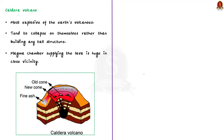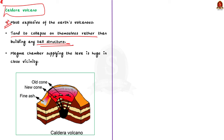The third type of volcano is called a caldera. These are the most explosive of earth's volcanoes. They are usually so explosive that when they erupt, they tend to collapse onto themselves rather than building a tall structure. These collapsed depressions are called calderas. Their explosiveness indicates that the magma chamber supplying the lava is not only huge but is also in close vicinity.